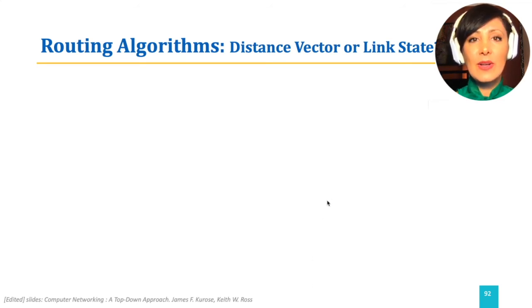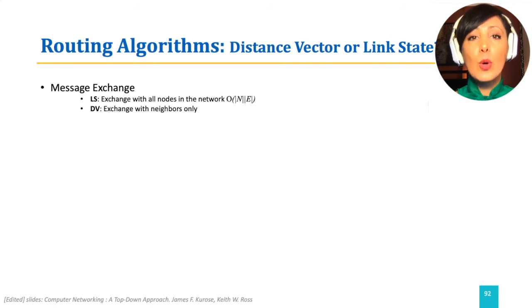In the link state algorithm, the nodes need to know about the entire network. Therefore, the message exchanges happen for all of the nodes for each of their connected edges. Which, if there are n nodes and e links in the network, will be in the order of n e. In distance vector algorithms, updates only propagate to neighbors. This limits the number of messages exchanged substantially.